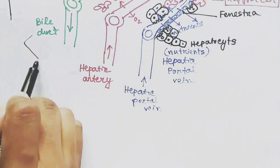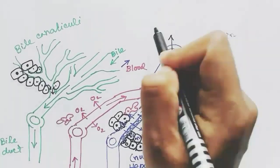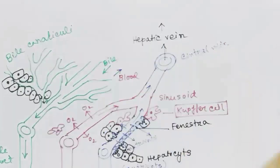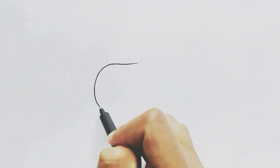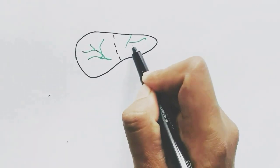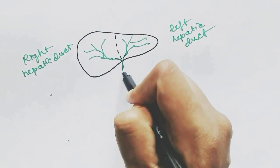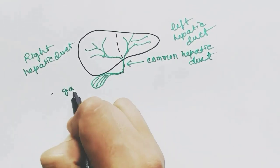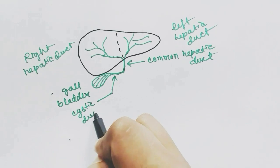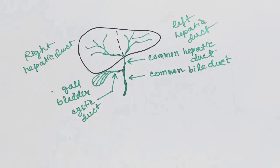The bile duct, hepatic artery, and hepatic portal vein together form the hepatic triad. The blood from the central vein runs through the hepatic vein and reaches the heart for re-oxygenation. The liver is mainly divided into two parts — the right and left lobe — and bile canaliculi form the right and left hepatic ducts, which meet to form the common hepatic duct. The gallbladder's duct is called the cystic duct, and the cystic duct meets the common hepatic duct to form the common bile duct, which runs towards the duodenum.